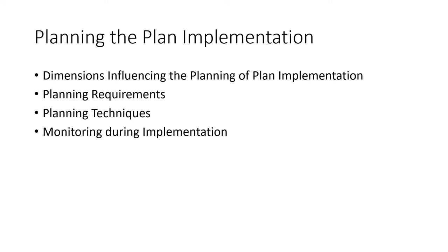Now the review process — then evaluating the level of implementation. Finally, we will have to come up with policy and assessment. You have done your monitoring and the implementation, monitoring during implementation by looking at the needs. You have looked at the review and evaluated the level of implementation. Out of the level of implementation, you can derive your policy plan assessments, and from the policy plan assessment, policy can then emanate. This is how you need to plan the implementation plan.